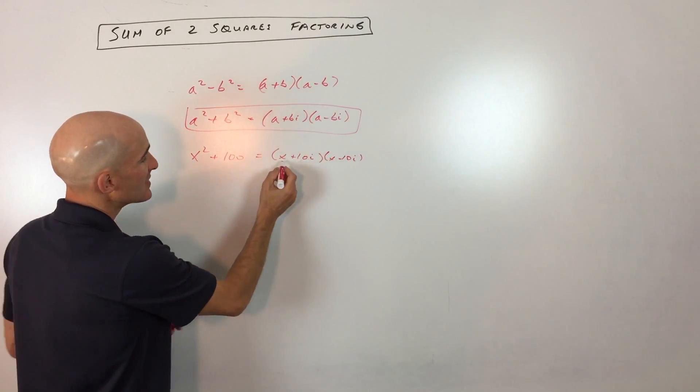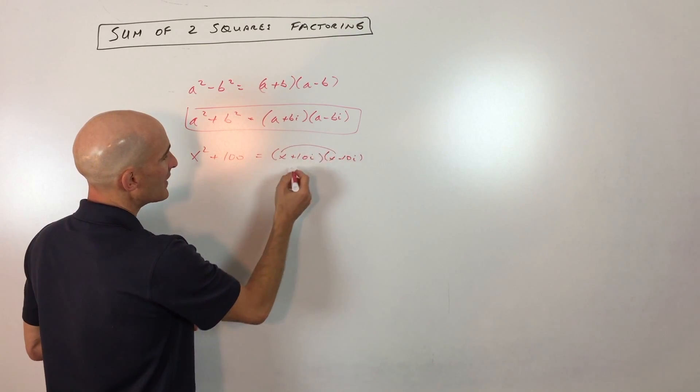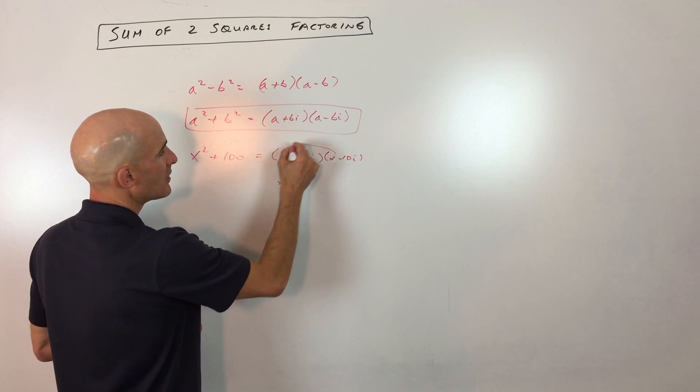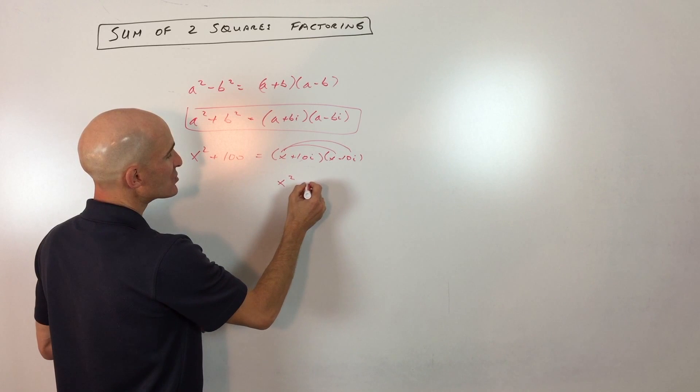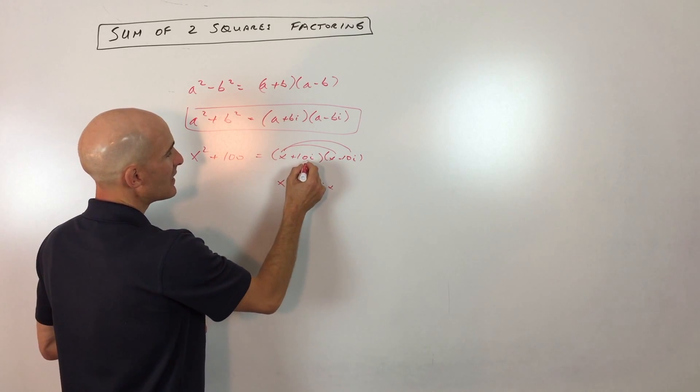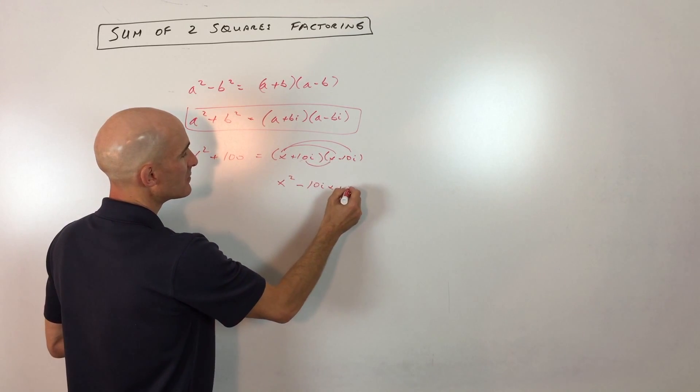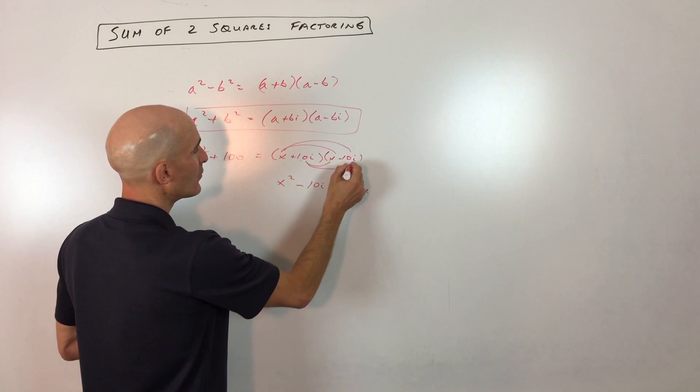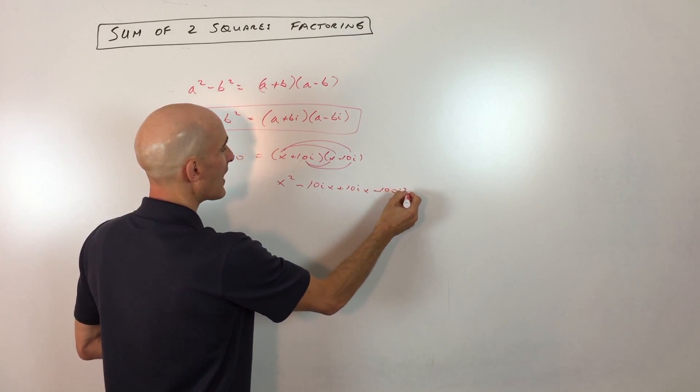Now let's just double check by multiplying these together. So if we do the distributive property, we get x times x, which is x squared, x times negative 10i, which is negative 10ix. And then if we distribute the 10i, we get plus 10ix, and then we get negative 100i squared.